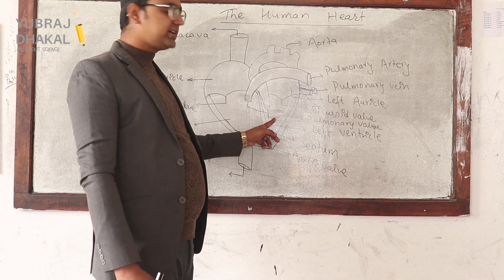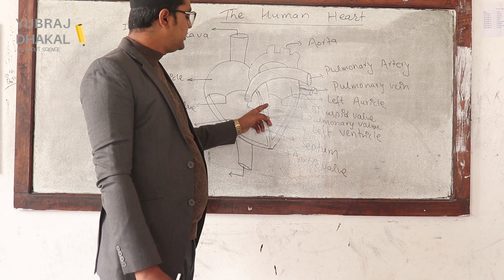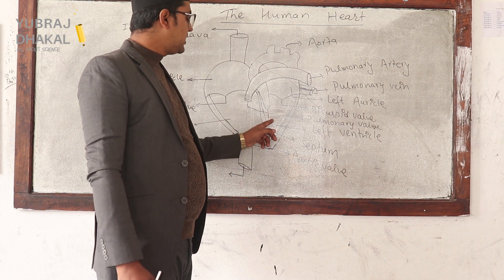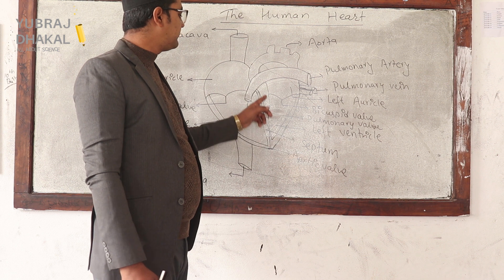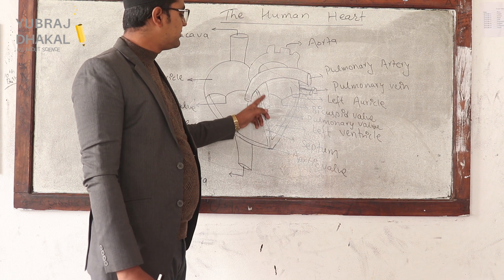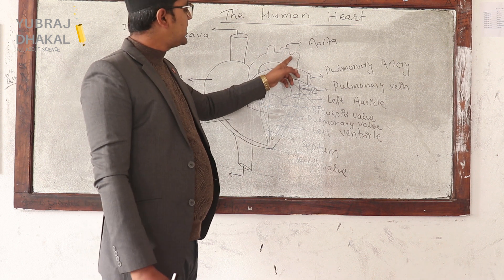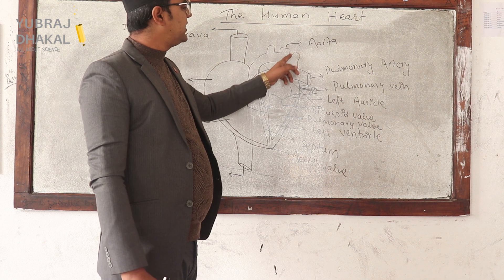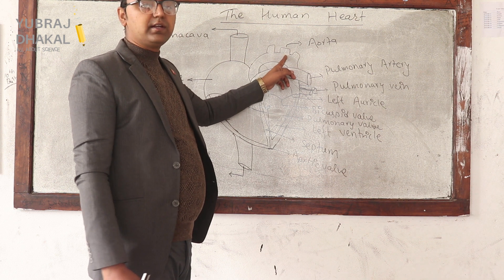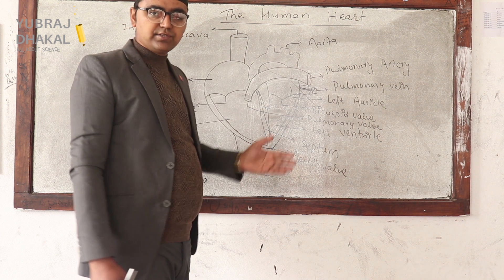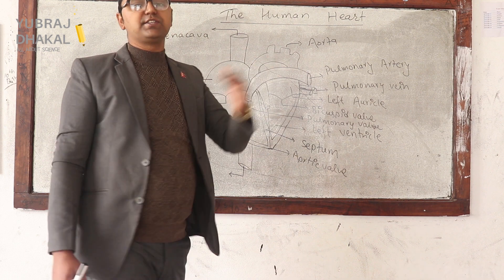During contraction of the heart, the aortic valve opens, and the pure oxygenated blood from the left ventricle goes through the aortic valve into the aorta, and from the aorta it is distributed to different cells and parts of the body.